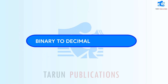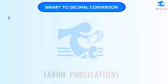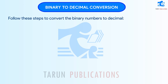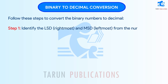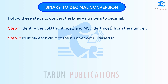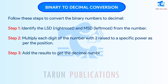Binary to decimal conversion. Follow these steps to convert binary numbers to decimal. Step 1: Identify the LSD (rightmost) and MSD (leftmost) from the number. Step 2: Multiply each digit of the number with 2 raised to a specific power as per the position. Step 3: Add the results to get the decimal number.